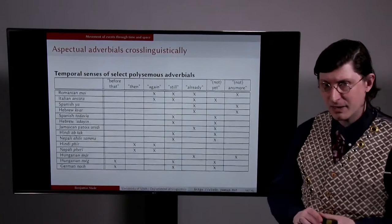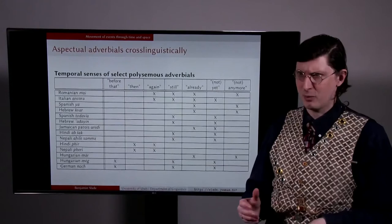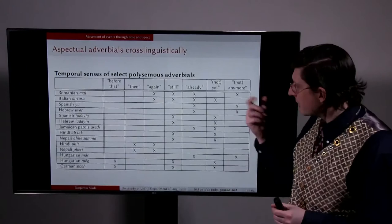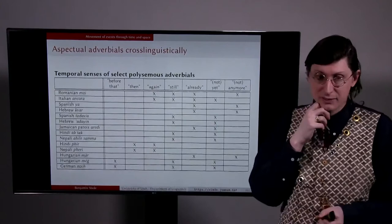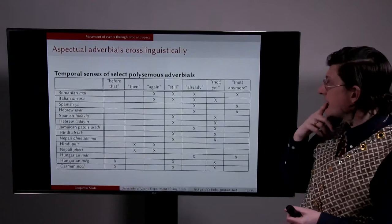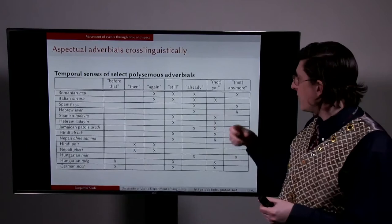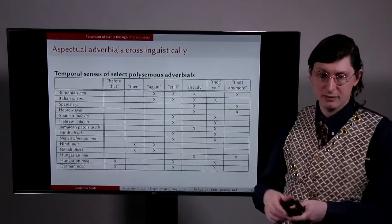Cross-linguistically, aspectual adverbials are interesting in that they're polysemous in different ways than what we just saw in English, or additionally in other ways as well. As we can see in this chart, where we're looking at the temporal senses of different adverbials in some of these languages, a number of these have more than one reading. For instance, Italian ancora can mean not only again but also still and already and yet. In Nepali, pheri can mean then or again.